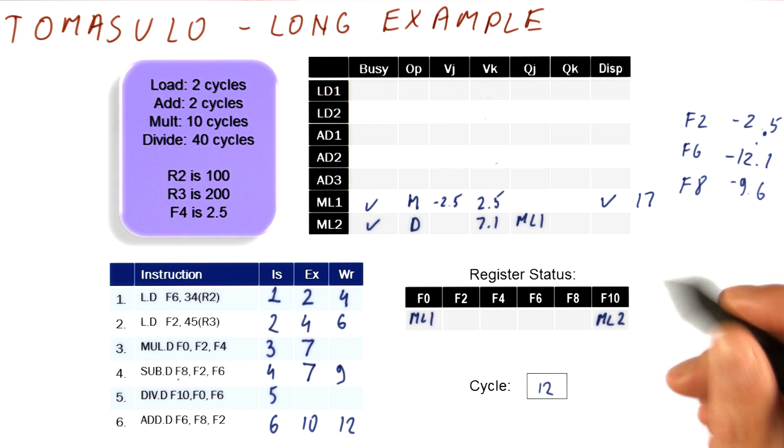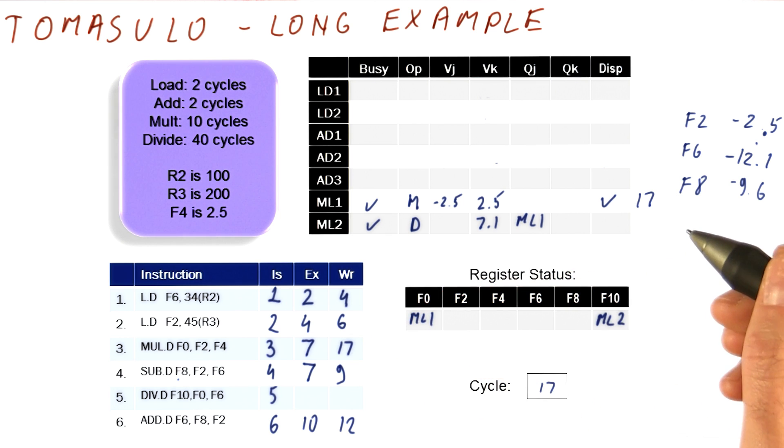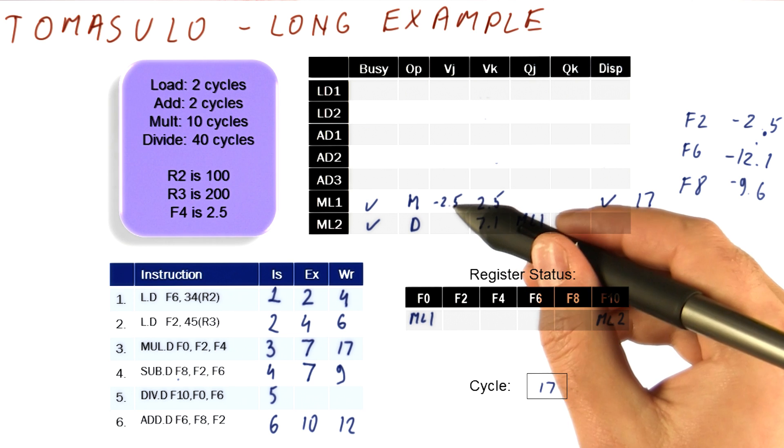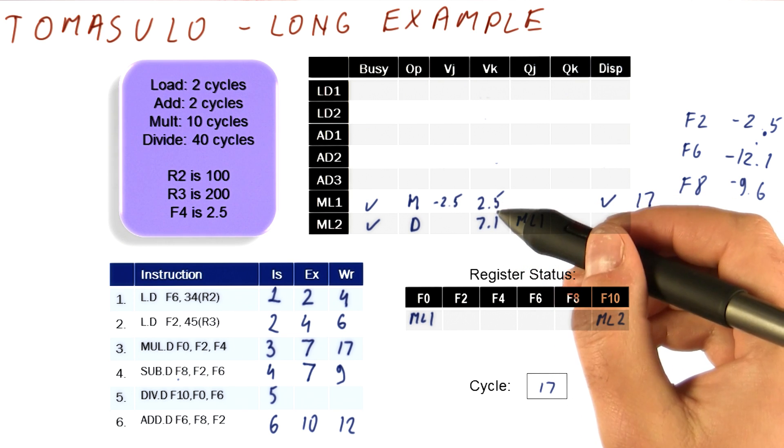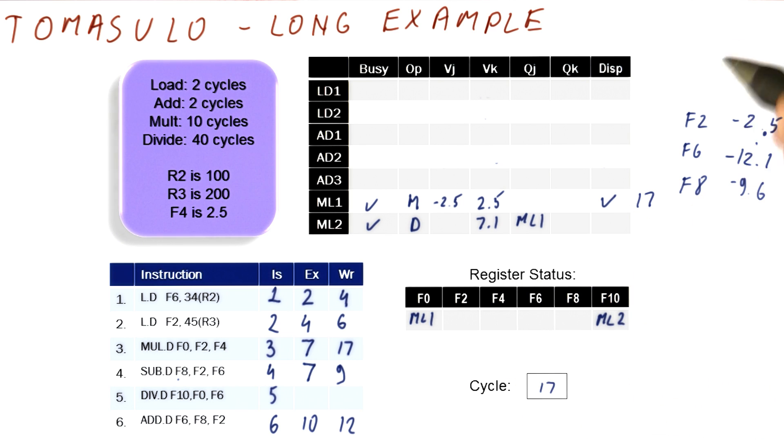Now nothing will really happen until cycle 17. In cycle 17, this multiply is finally going to broadcast its result. We're multiplying 2.5 times 2.5 and then minus. And that value goes into F0.